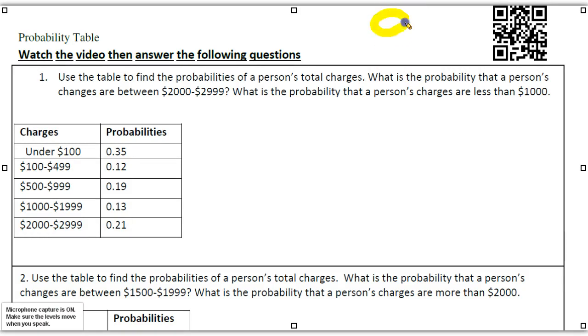Okay, we are on page 98, and we're taking a look at probability tables. I use the table to find the probability of a person's total charges. That is the probability that a person's charges are between this and this. What is the probability that the person's charges are less than this?